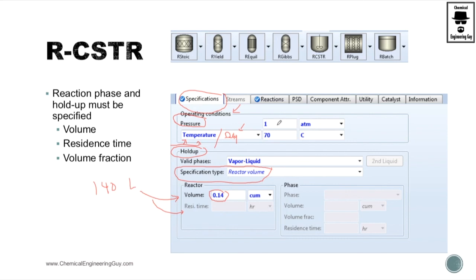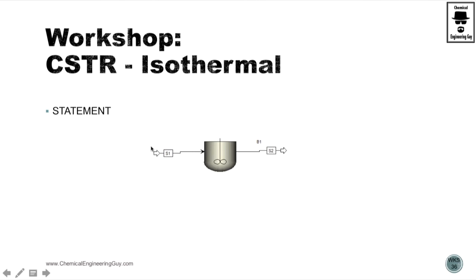Also, you can select pressure drop. Oh, sorry. Pressure drop goes here. You just need volume, residence time, and volume fraction. So let's start working with a workshop right here. Let's start with an isothermal reactor.